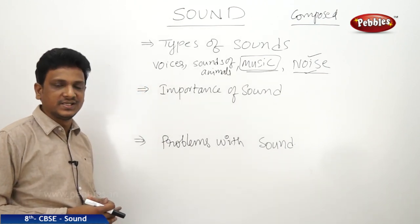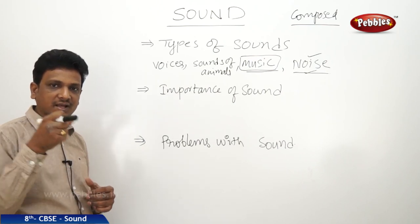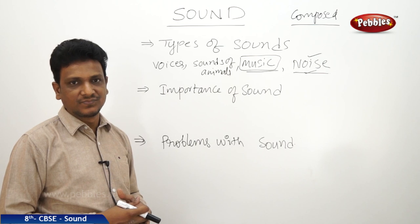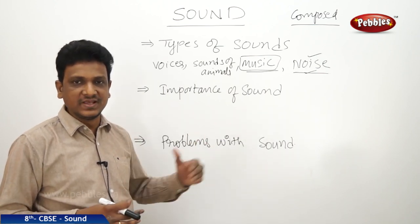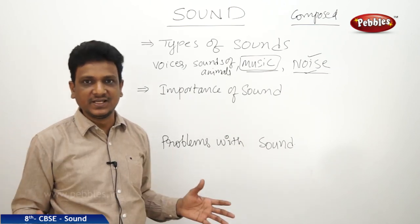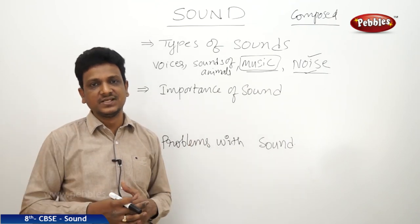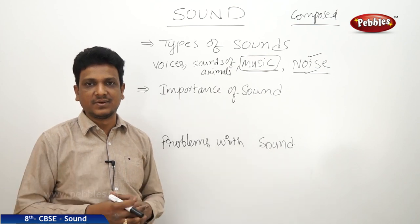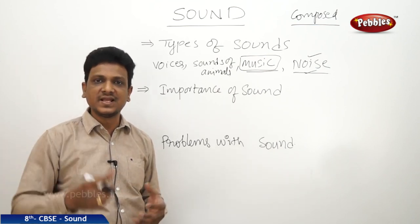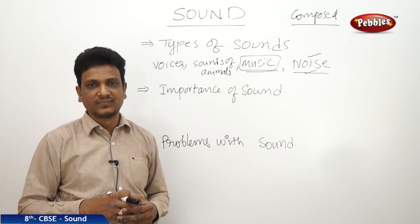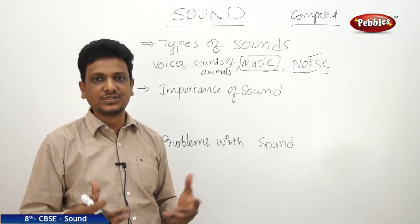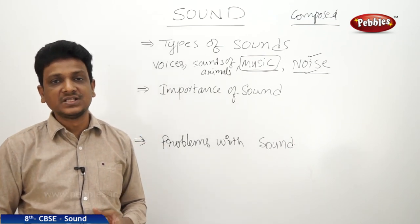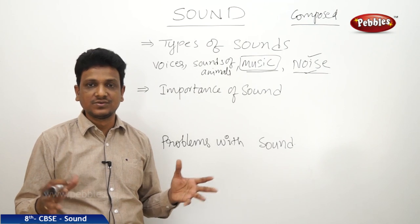Sound is used at different places. Vehicles produce sound to save people from accidents — a truck driver blows the horn if somebody is crossing the road. In a factory emergency, a siren is blown and all people become alert. In a school, a bell rings when the class period is over so the teacher knows without anyone telling them. So with the help of sounds, so many things happen.